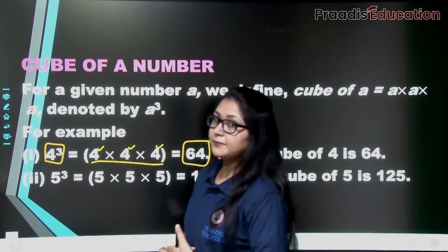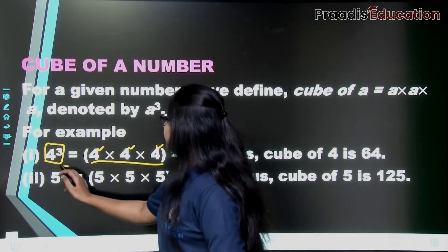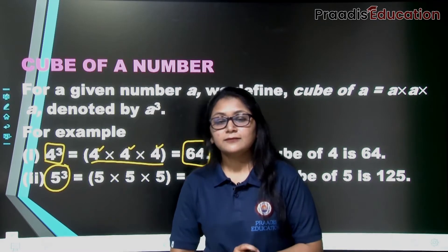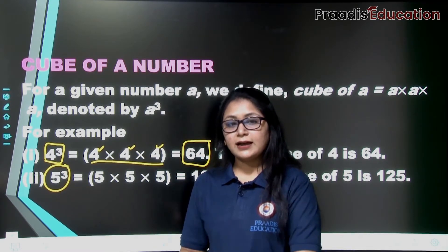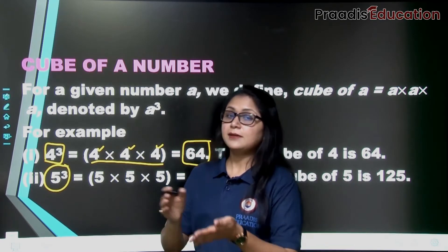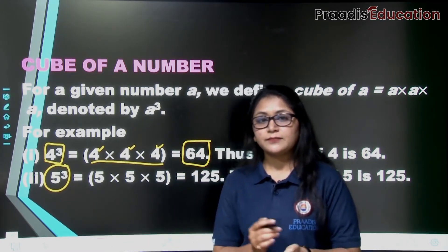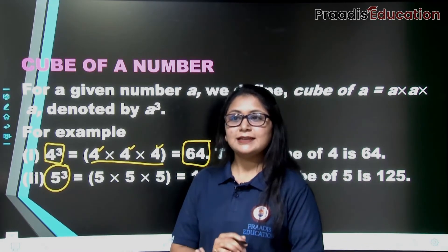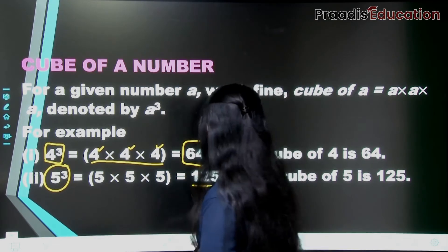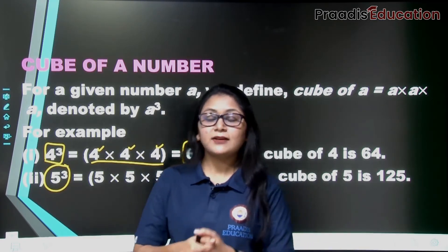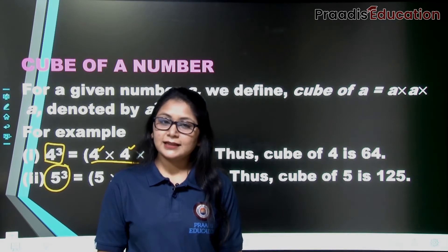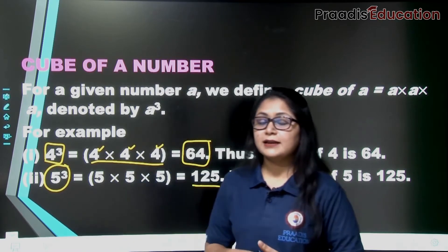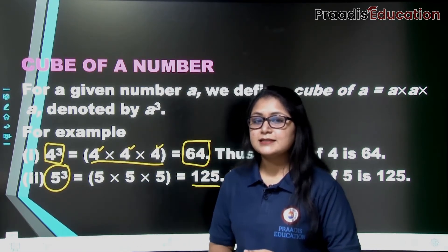One more example. Here we are finding the cube of 5. To find the cube of 5, what do we do? 5 multiplied by 5, again multiplied by 5. When 5 is multiplied three times, we get 125. So we will say the cube of 5 is 125. How easy is that? Since we have already learned squares, finding cubes is very easy for us.